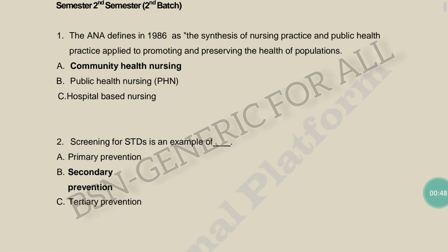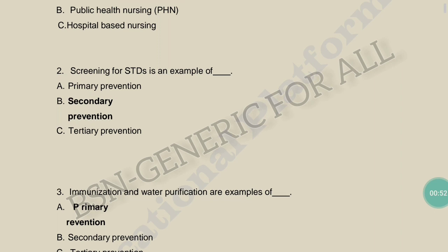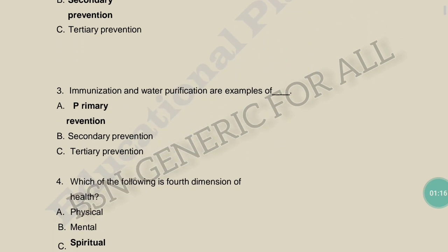MCQ: Screening for STDs (sexually transmitted diseases) — when screening is performed, which method of prevention is used? Primary, secondary, or tertiary prevention? Screening for STDs or mammography for breast cancer — this is secondary prevention. Immunization and water purification are examples of primary prevention.